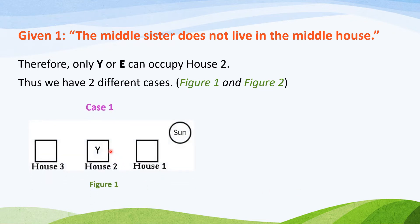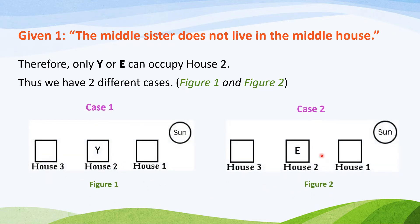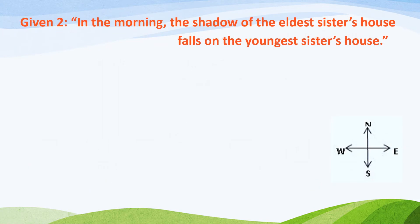Case 1 is where Y occupies house 2, and case 2 is where E occupies house 2. The question also tells us that in the morning, the shadow of the eldest sister's house falls on the youngest sister's house. We know that in the morning, the sun rises in the east and any shadow will fall towards the west.